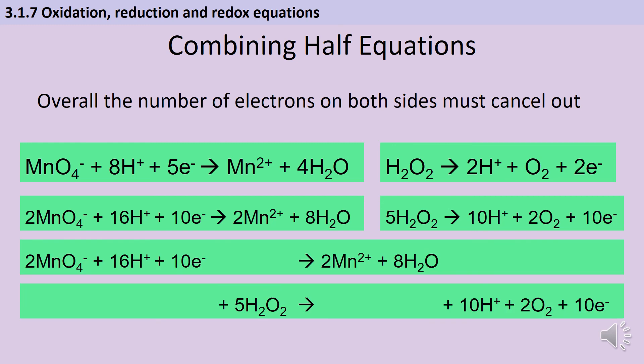Then just like in the previous example I can put these together and I can look at the number of electrons and see that they now cancel out. What I can also see in this one which I couldn't see in the previous example is that I've got hydrogen ions on both sides. Now they're not going to fully cancel out but I can cancel out all 10 on the right hand side and 10 of the 16 that I have on the left hand side. So those 16 on the left hand side now instead of having all 16 of them I'm just going to have six.